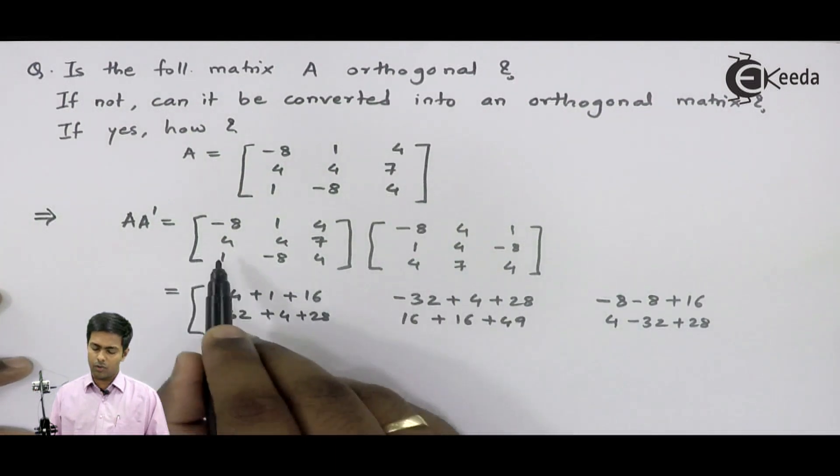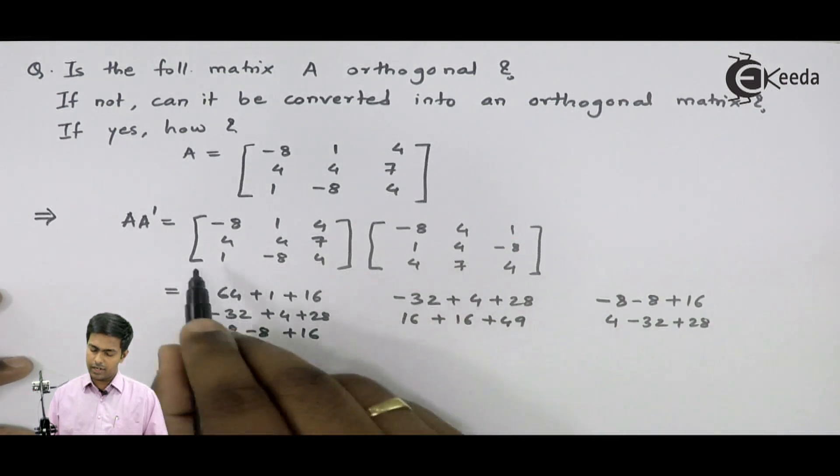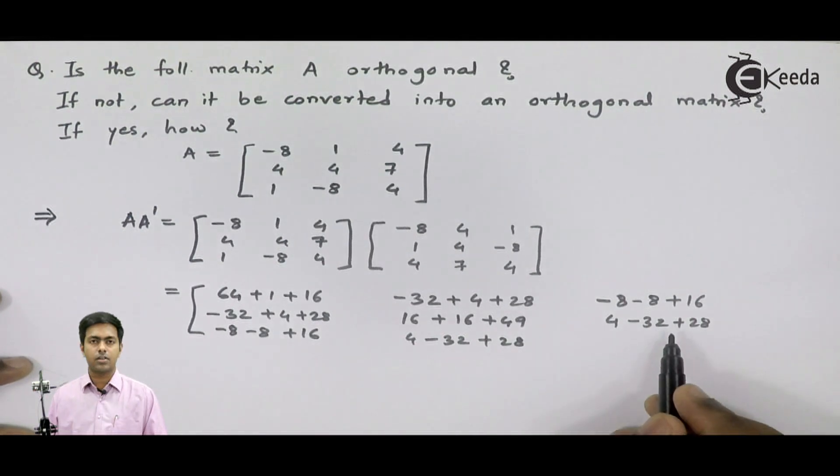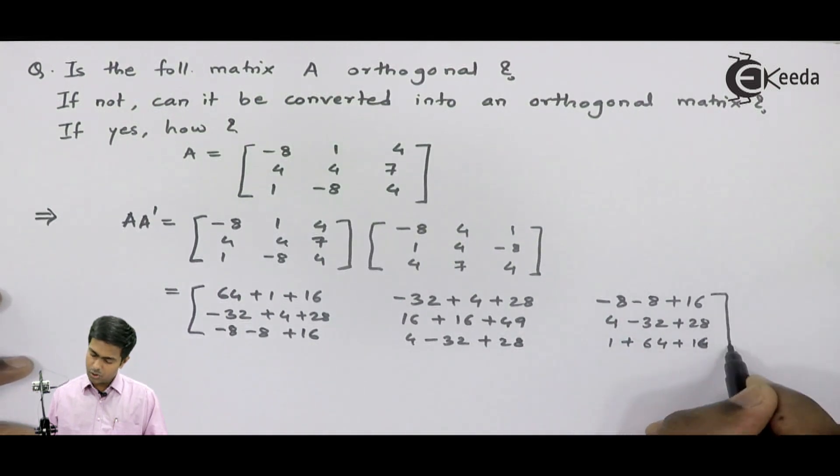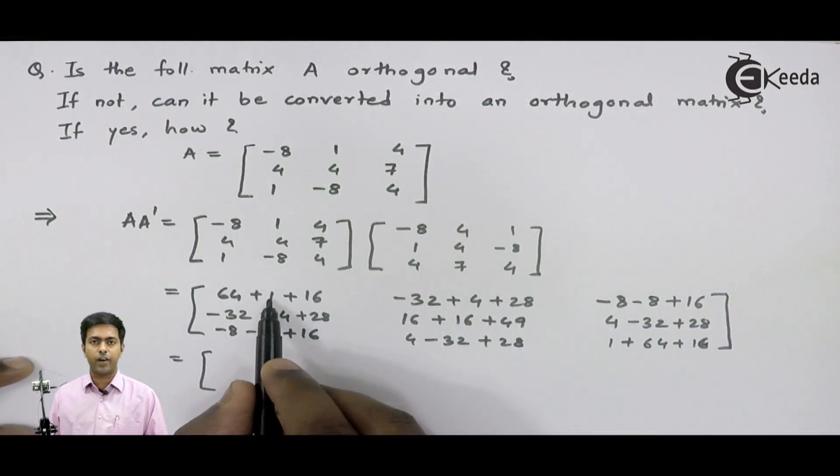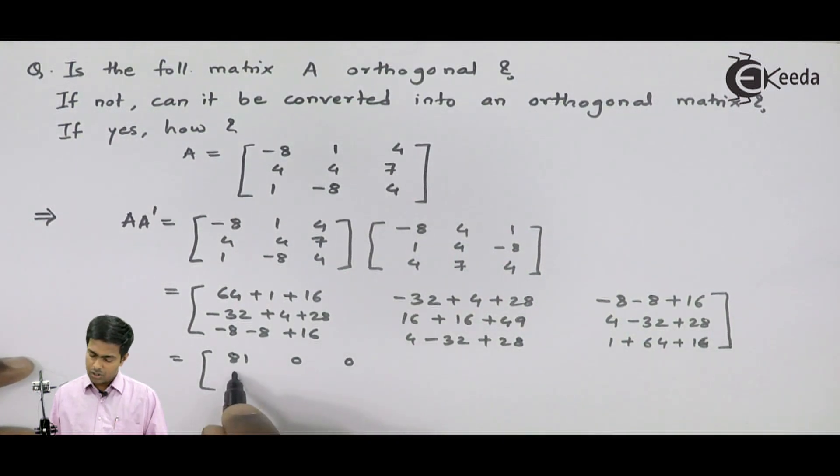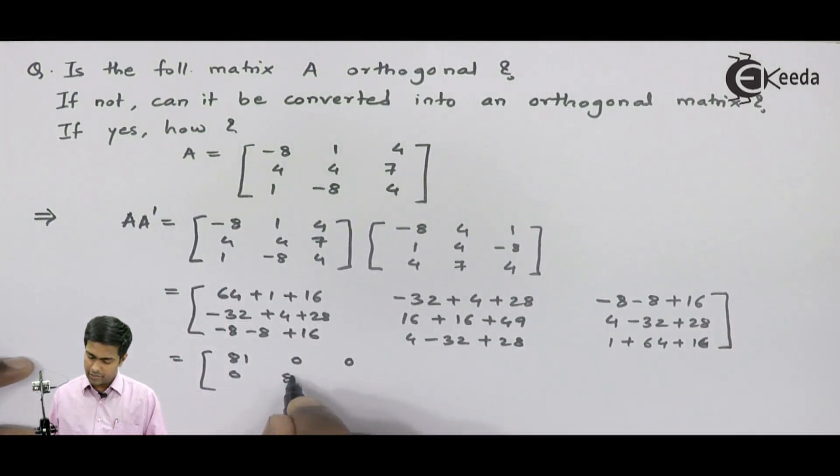And the last row, first column: 1 into minus 8, minus 8, minus 8 plus 16. Here we will get 4, minus 32 plus 28, and the last element will be 1 into 1, 1 plus 64 plus 16. We will get here 64 plus 16 plus 16, that is 81. Here this will become 0, again 0, 0. This is 32 plus 49, that is again 81, 0, 0, 0, 81.